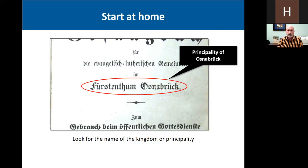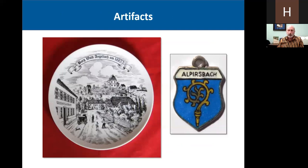In this case, this one was published in the Principality of Osnabrück. That's a bit like saying the person was from Missouri or even eastern Missouri — the states or kingdoms over there weren't as large as U.S. states, but it at least helps narrow down your search. It gives you a clue. Also, do you have artifacts like medals, plates, or postcards that mention a village name on them? Like these items here — this little ceramic plate and this little medallion.